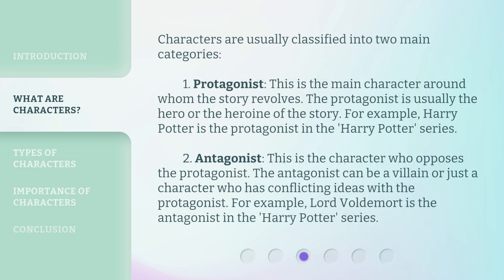Characters are usually classified into two main categories. 1. Protagonist — this is the main character around whom the story revolves. The protagonist is usually the hero or the heroine of the story. For example, Harry Potter is the protagonist in the Harry Potter series.